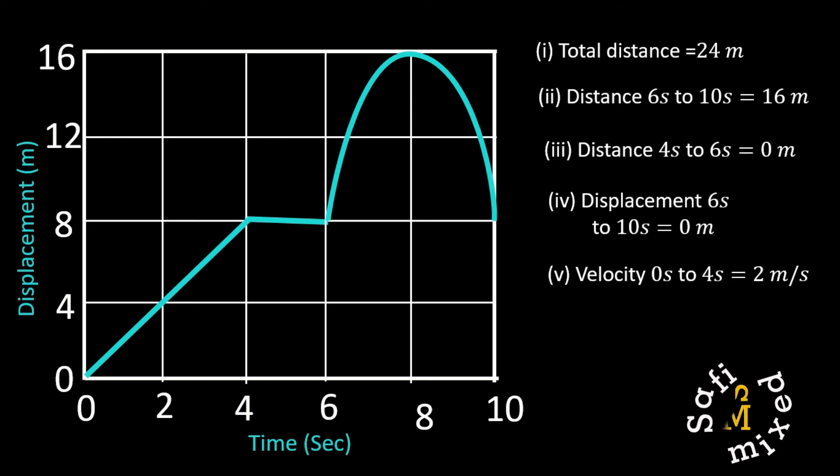Number five: Convince yourself that the velocity from zero to fourth second is 2 meters per second and is uniform. Number six: Convince yourself that the average velocity from sixth second to eighth second is 4 meters per second and is not uniform.